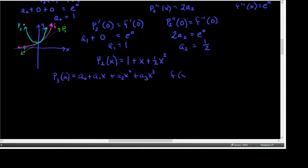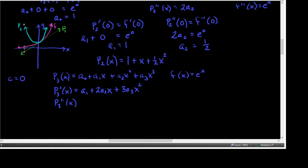Our function is still E to the X, and we still have a center at 0. If we're going to go all the way to the third derivative, we need to do that for our third degree polynomial as well as for our function. So the first derivative of the polynomial is A sub 1 plus 2 A sub 2 X plus 3 A sub 3 X squared. Then the second derivative of that degree 3 polynomial is 2 A sub 2 plus 3 times 2 — I know that's 6, I'm just being lazy — A sub 3 X.